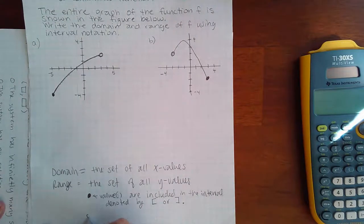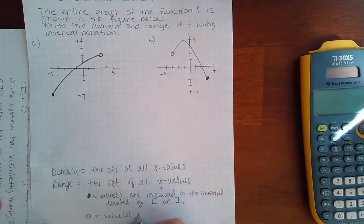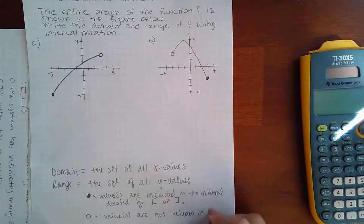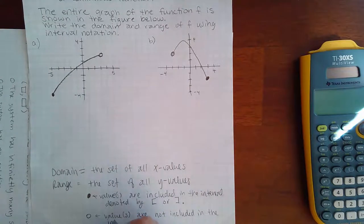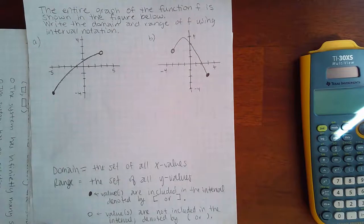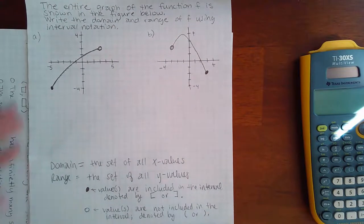Another thing you need to know is that an open dot means that the values or value are not included in the interval. And these guys are denoted by using a parenthesis or this kind of parenthesis. It really depends.